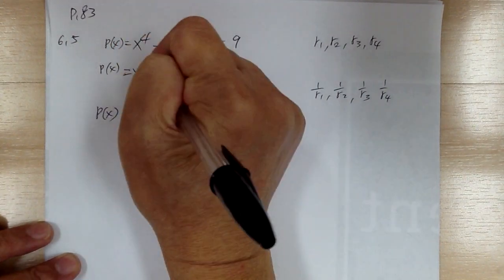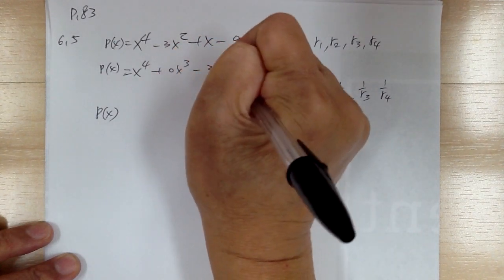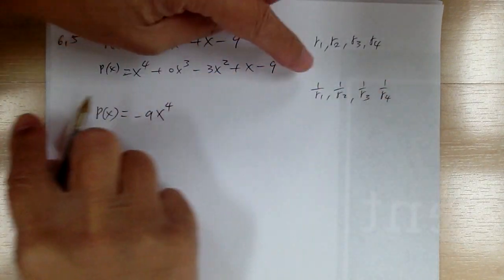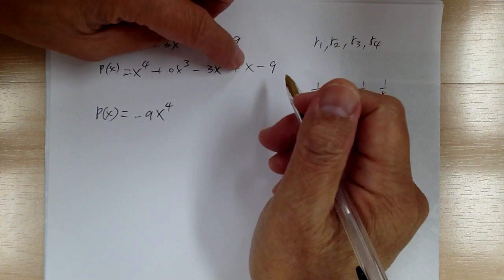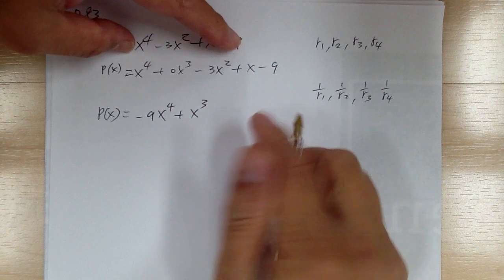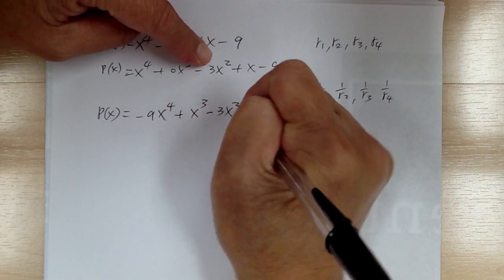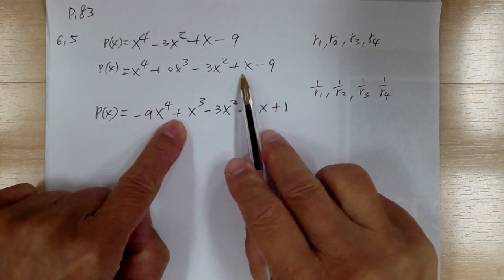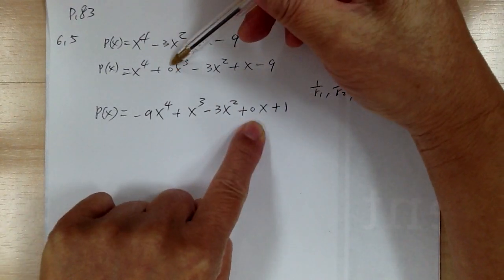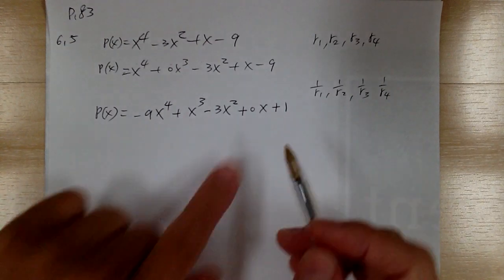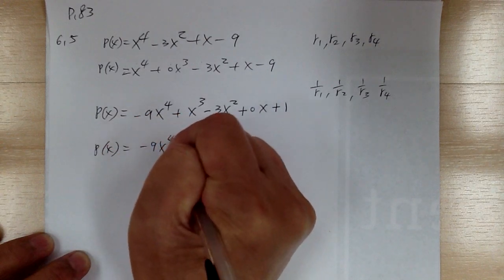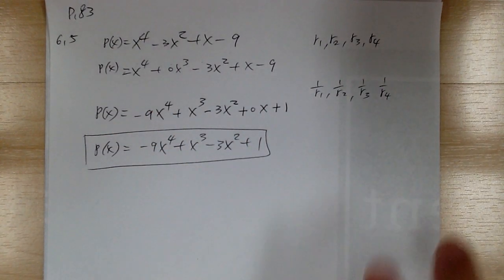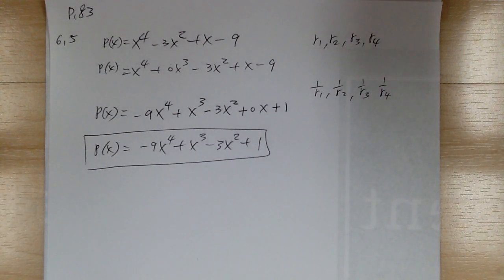Notice there's a missing term, so you write x to the four plus zero x cubed minus three x squared plus x minus nine. The coefficients in reverse order are: negative nine, one, negative three, zero, one. So the answer is negative nine x to the four plus x cubed minus three x squared plus one. To find a polynomial with reciprocal roots, just make the coefficients go in the opposite direction.